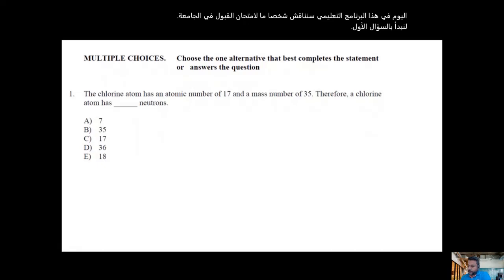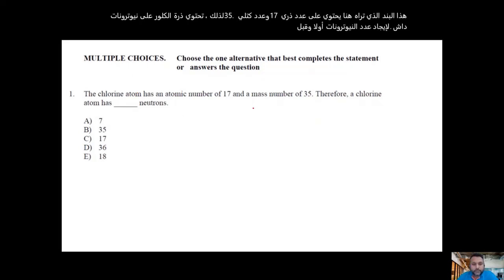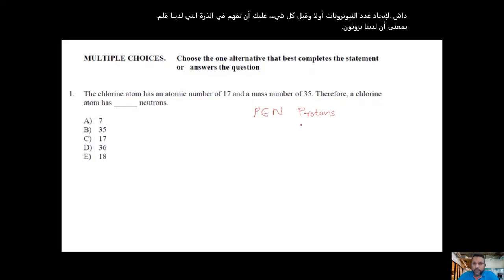The chlorine atom has an atomic number of 17 and a mass number of 35. Therefore a chlorine atom has how many neutrons? To find the number of neutrons, first of all you have to understand that in an atom we have protons, electrons, and neutrons.